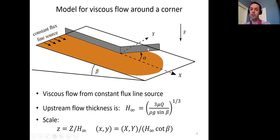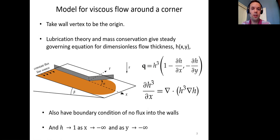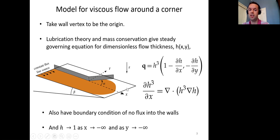We're interested in how the flow is perturbed as it goes around this corner and what controls the shape of the dry region and the contact line. We scale flow thicknesses with the far-field thickness h∞, and scale x and y coordinates with h∞ cot β — chosen to remove constants from the governing equation. Here x is the downslope direction, y is perpendicular, and the slope is at angle β to the horizontal. We take the wall vertex at the origin and use lubrication theory, neglecting vertical velocities, then apply mass conservation to obtain the steady governing equation.